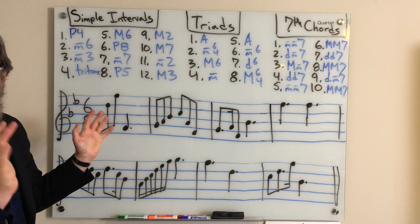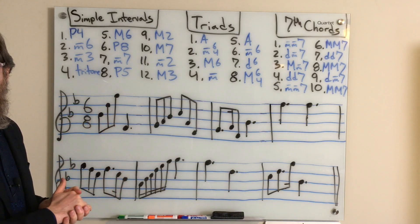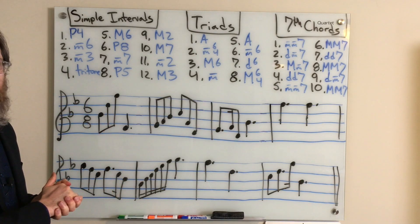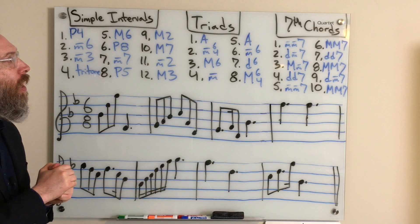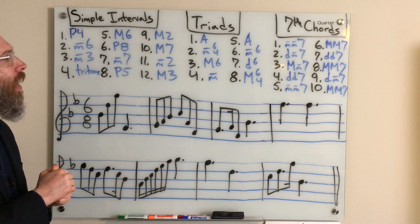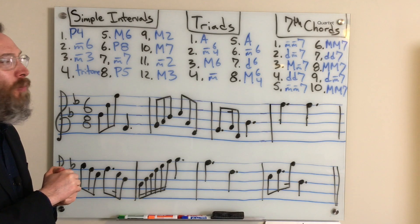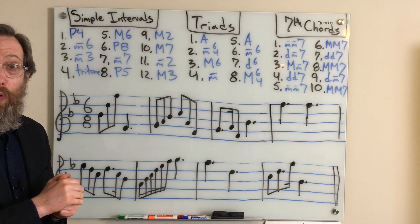And I probably shouldn't say always, but for the most part and for the purposes of what we're doing here, that's the way it's always going to be. Number 2 was a minor triad in 2nd inversion. Number 3 was a major triad in 1st inversion. And 4 was a minor triad in root position.